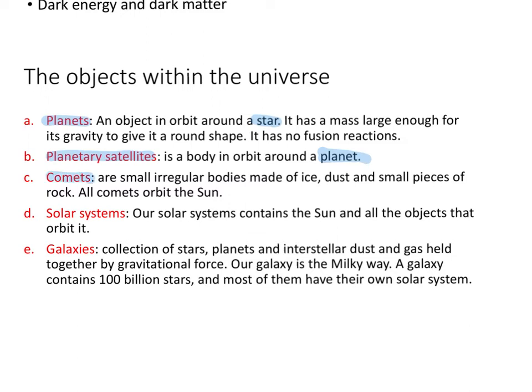Comets are simply ice, dust and small pieces of rock stuck together, and they all orbit the Sun. Our solar system contains one star, which is the Sun, and all the objects that orbit it. Galaxies are simply a collection of stars, planets and interstellar dust and gas, all held together by gravitational force.